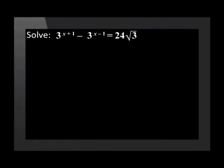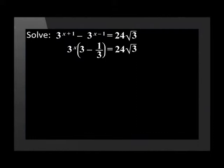Let's do an example together. Solve: 3 to the power of x plus 1 minus 3 to the power of x minus 1 is equal to 24 times by the square root of 3. On the left hand side, we take out a common factor of 3 to the power of x, and in brackets we will be left with 3 minus one third. The right hand side stays 24 times by the square root of 3.